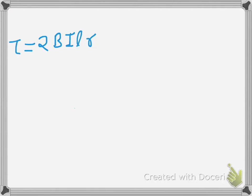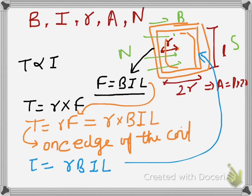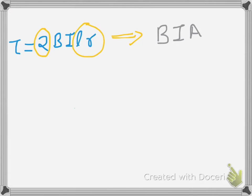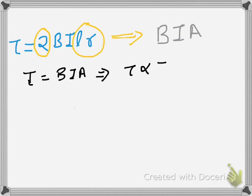Taking a closer look, 2·r·B·I·L equals B·I·A, because the area A = L × 2r as derived earlier. So the total torque τ = B·I·A. This implies that τ is directly proportional to I. So clearly, the torque of the instrument is directly proportional to the current, meaning this particular instrument can measure the value of current flowing through the coil.